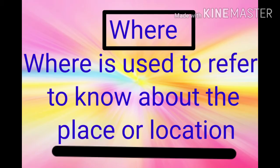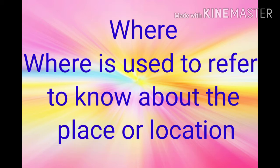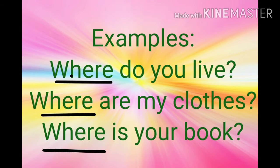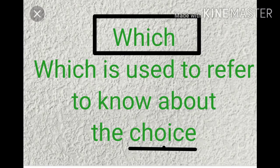The third one is WHERE. WHERE is used to refer to know about the place or location. If you want to know the place where the incident has taken place or something like that. Examples: Where do you live? Where are my clothes? Where is your book? So here we want to know the place.